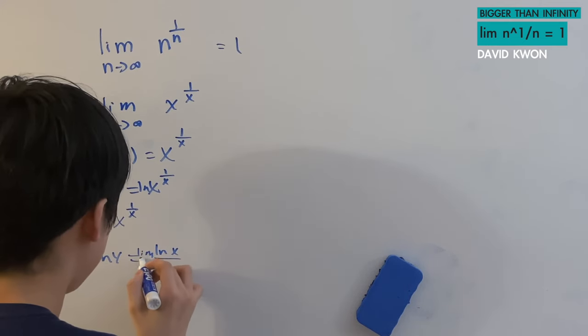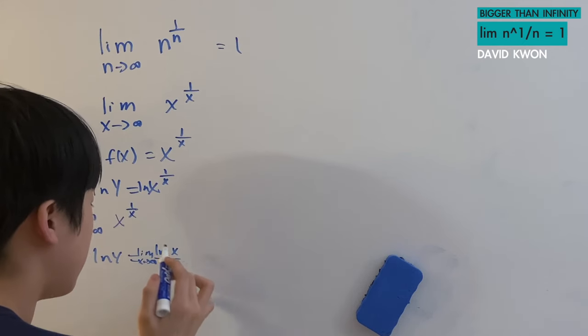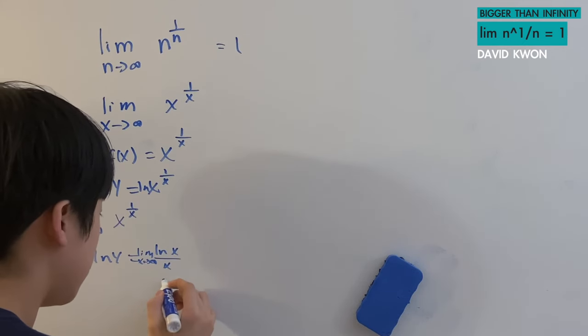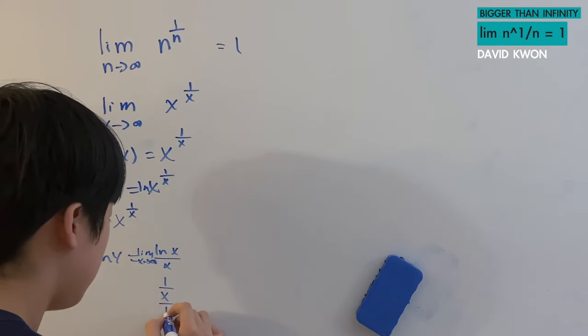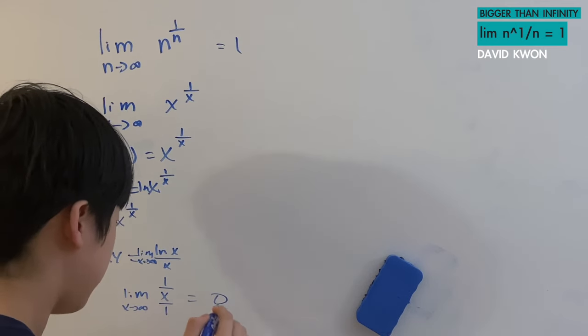oh yeah, I'm supposed to have a limit as x approaches to infinity here. And then, when I apply L'Hôpital's rule here, we get 1 over x over 1 as limit as x approaches to infinity, and that is equal to 0.